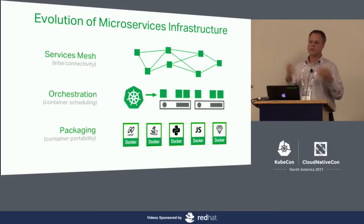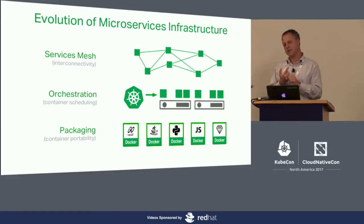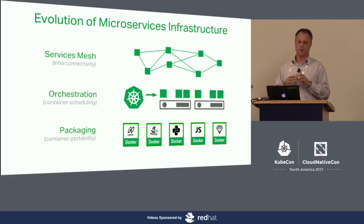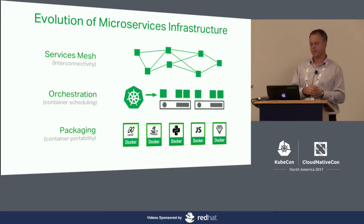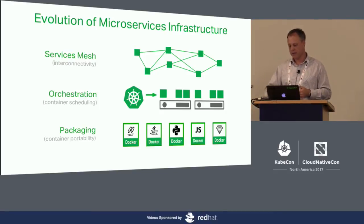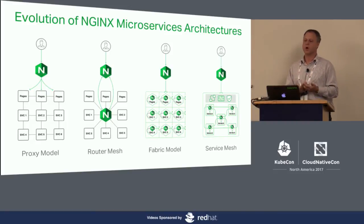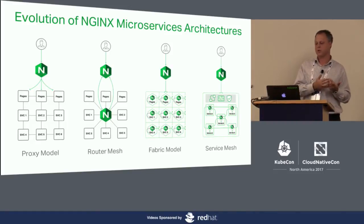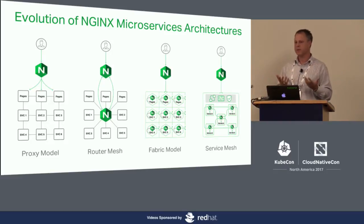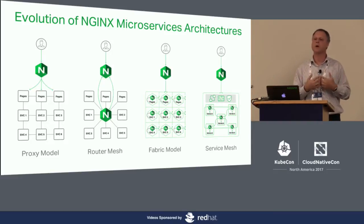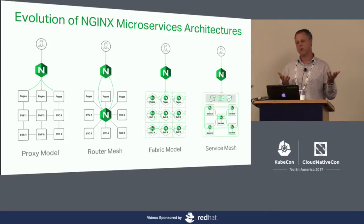The services mesh enables you to stitch those services together, provides a high level of security, enables you to monitor them effectively, and lets you run multiple applications side by side. Nginx has been offering various microservices architectures to help vendors move from a simple legacy deployment with just one egress load balancer to more sophisticated deployments that care about east-west traffic.